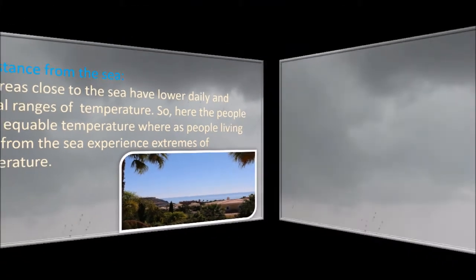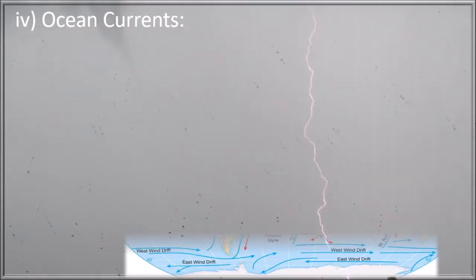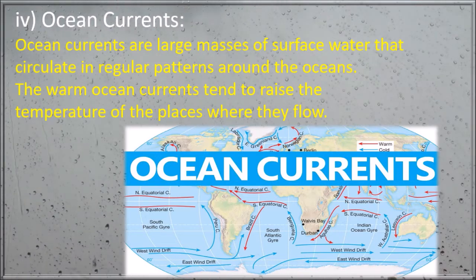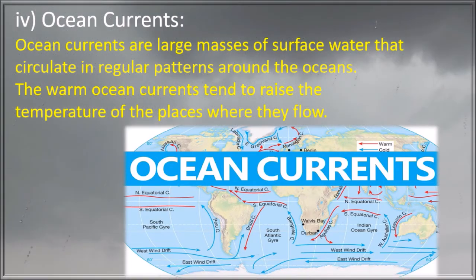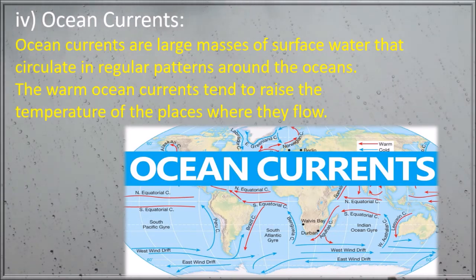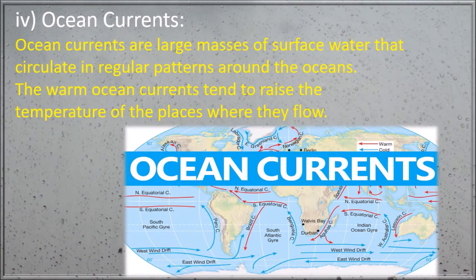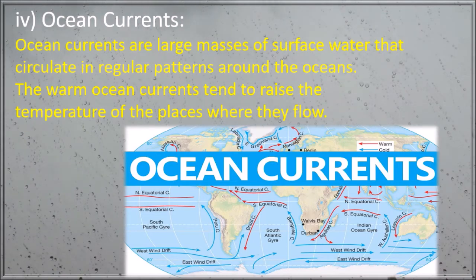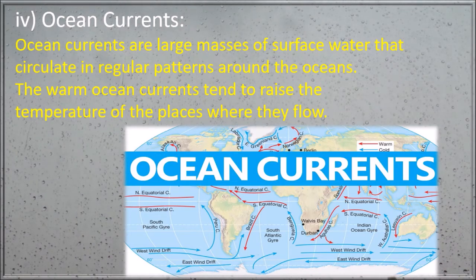The fourth factor is ocean currents. Ocean currents are large masses of surface water that circulate in regular patterns around the oceans. The warm ocean currents tend to raise the temperature of the places where they flow. For example, the British Isles enjoy a mild climate on account of the warm North Atlantic drift. Similarly, the Peru current, a cold ocean current, greatly cools the hot climate of Peru.